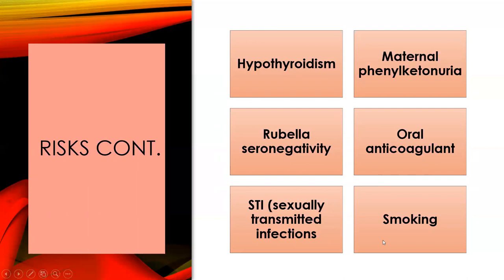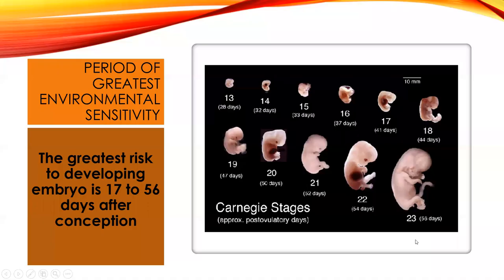Believe it or not, there was a time when physicians would actually recommend smoking to mothers during pregnancy because it causes low birth weight. Smoking causes vasoconstriction, so the baby doesn't get as much through the placenta and babies would be smaller, making delivery easier. Obviously that's not the way it is anymore.